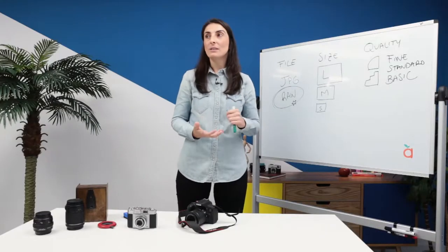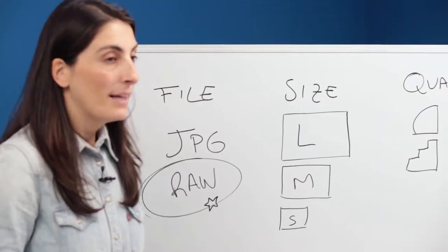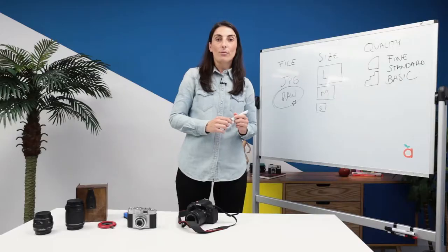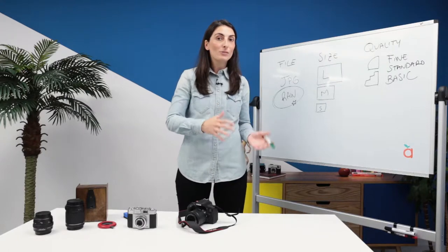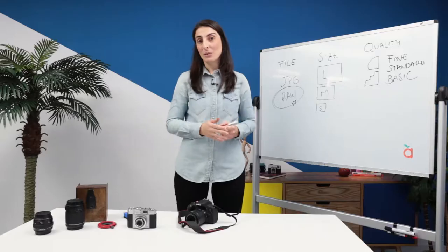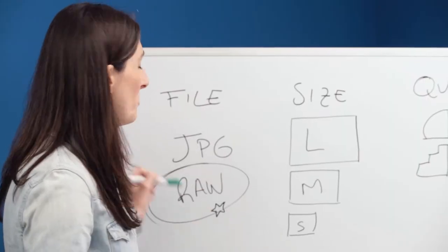The second file format is RAW and its main characteristic is that it hasn't been compressed, but before using this format we need to make sure that we know how to process RAW files, otherwise I wouldn't recommend you to work with it until you get to know it better.